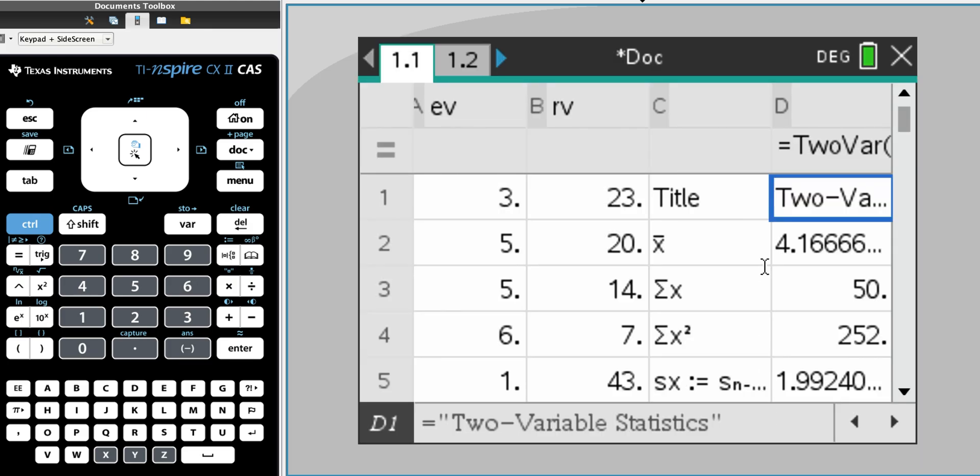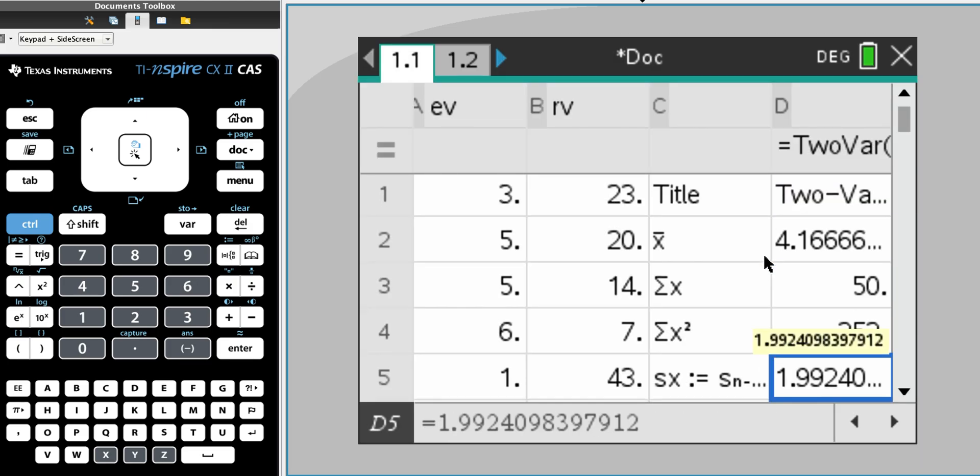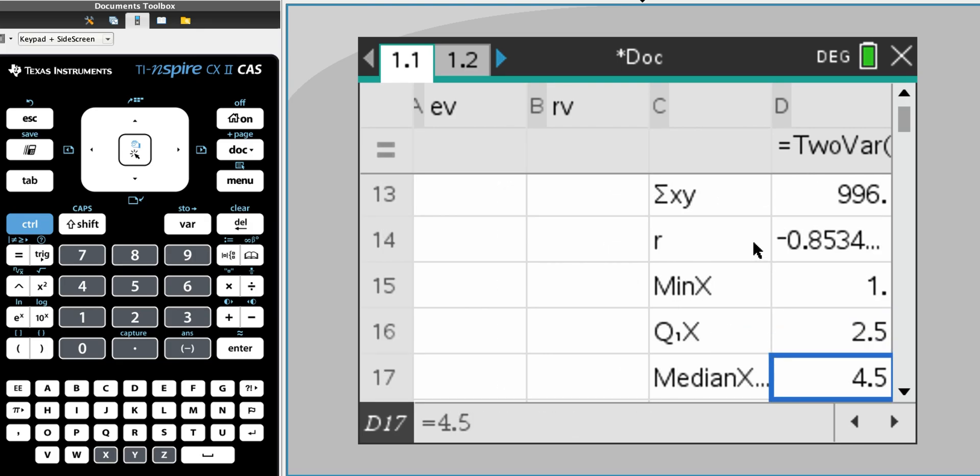When we click OK, we get all of these statistics. Now, scrolling down, one of the options will be R. This is Pearson's correlation coefficient. In this case, R is equal to negative 0.85, which tells us that it's a strong correlation.